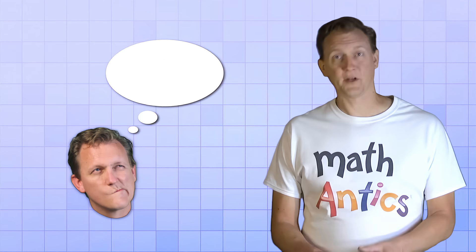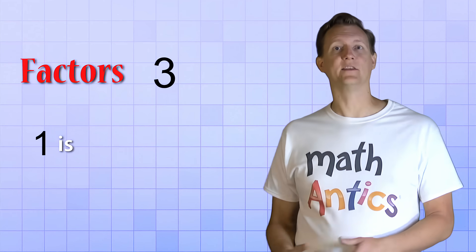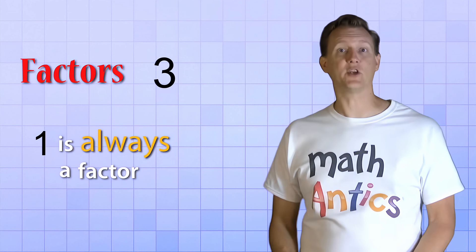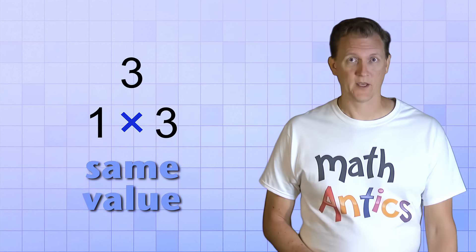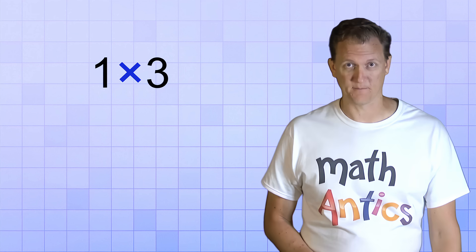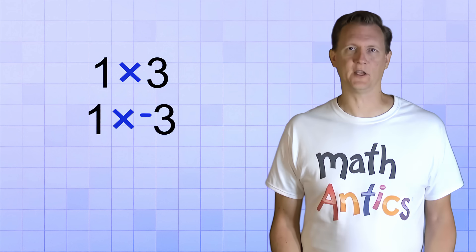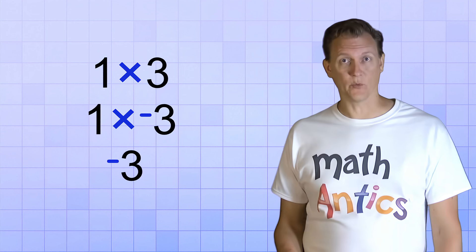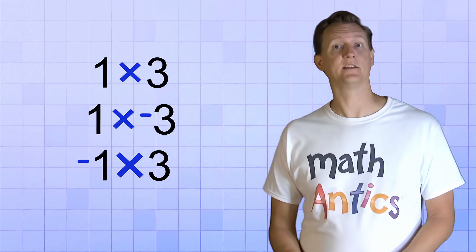For example, think about the number 3. We learned that 1 is always a factor of any number, because multiplying by 1 doesn't change a number — 3 and 1 times 3 are the same value. So you can factor out a 1 and have 1 times 3. On the other hand, if you have negative 3 instead, you could factor out a 1 and get 1 times negative 3, or you could factor out a negative 1, giving us negative 1 times 3.